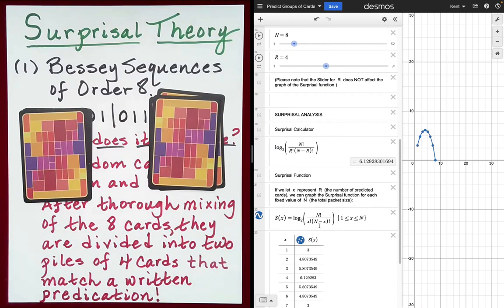So to be clear, N right now is set equal to 8 and R is set equal to 4. So with those two values, we find that the surprisal value for a Bessey sequence performance of order 8 is 6.13 bits.